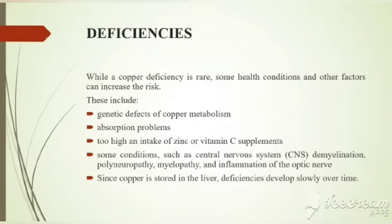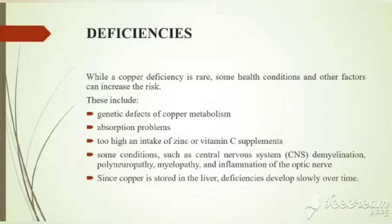While copper deficiency is rare, some health conditions increase the risk, including genetic defects of copper metabolism, absorption problems, too high an intake of zinc or vitamin C supplements, and conditions such as central nervous system demyelination, polyneuropathy, myelopathy, and inflammation of the optic nerves. Since copper is stored in the liver, deficiency develops slowly over time.